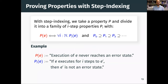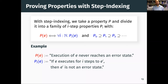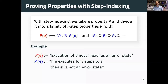You have this chain of properties that gets progressively more refined as the step index gets higher. The property p should be equivalent to the intersection over all i of pi of E. A simple example: if I want to prove that an execution of E never reaches an error state, the corresponding step-indexed property is: if E executes for i steps to some term E', then E' is not in an error state. If you prove that for all i, you know it can never reach an error state.